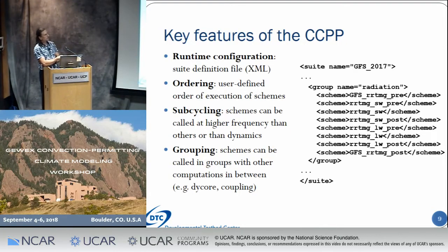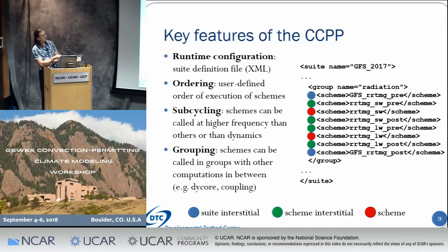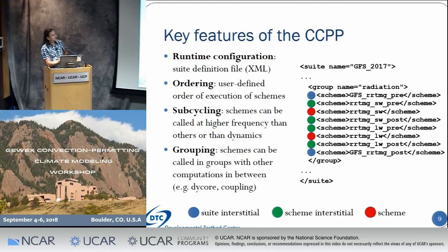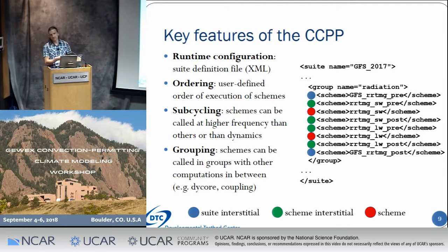Here's an example of a short extract of one of those suite definition files. This suite is called the GFS 2017 suite and contains a group called radiation with a whole bunch of schemes. The actual physics schemes — what you'd think of as a physics scheme — are shown with red bullets: the RRTMG shortwave and longwave schemes. The green schemes are scheme-specific interstitials — code a scheme needs to prepare beforehand and clean up afterwards. The blue bullets are suite-specific interstitials. If you want to bring the RRTMG radiation scheme from the GFS suite into a different suite like RAP, you would replace those two blue schemes with RAP-specific RRTMG pre and post schemes.